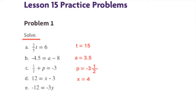Part e: negative 12 equals negative 3y. To get y by itself, we divide both sides by negative 3. The right side is equal to 1y, or y. The left side is negative 12 divided by negative 3 — a negative divided by a negative is a positive, and 12 divided by 3 is 4. So the value for y is positive 4.